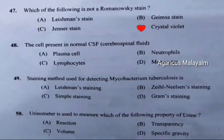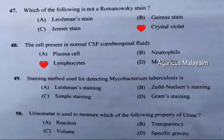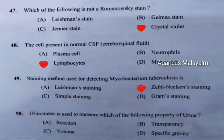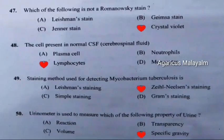Question 48: The cell present in normal CSF — correct answer is option C, lymphocytes. Question 49: Staining method used for detecting Mycobacterium tuberculosis — correct answer is option B, Ziehl-Neelsen staining. Question 50: Urinometer is used to measure which of the following property of urine? Correct answer is option D, specific gravity.